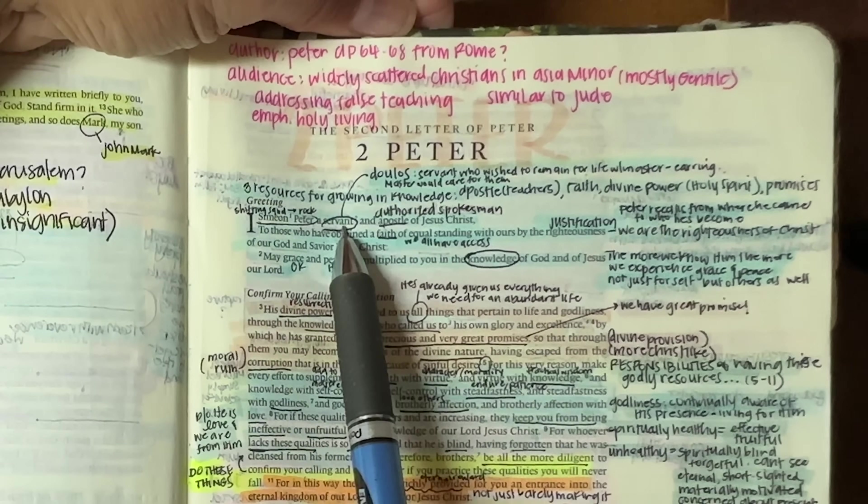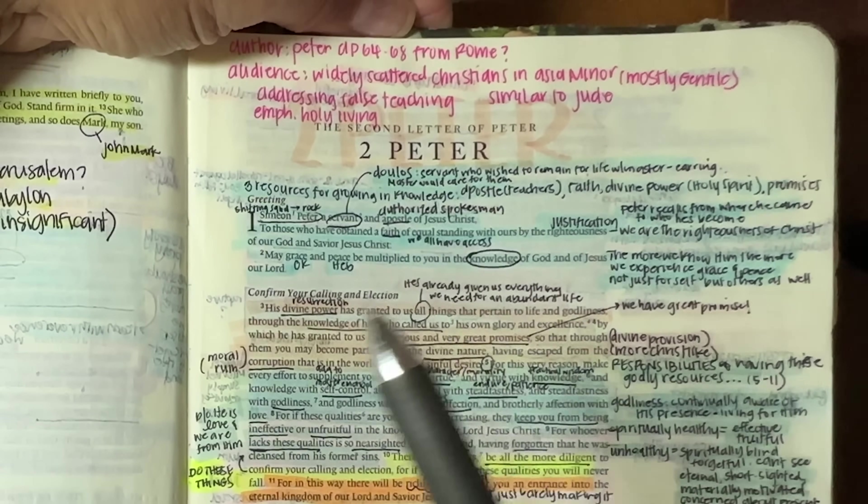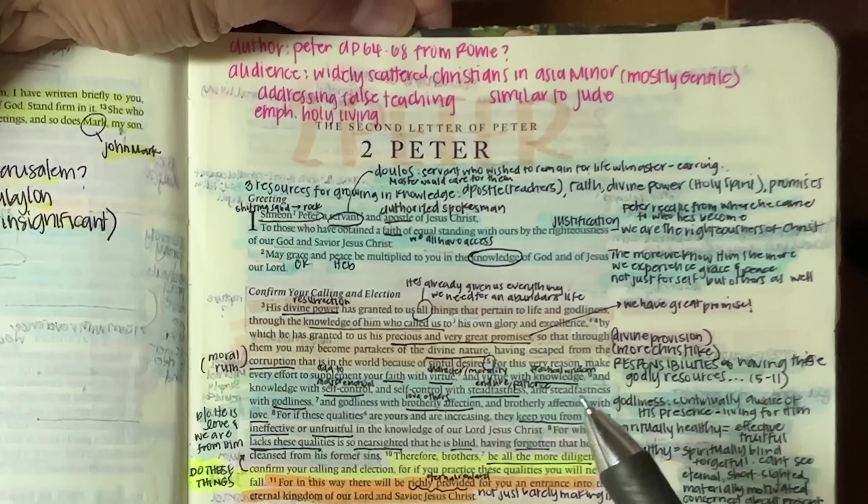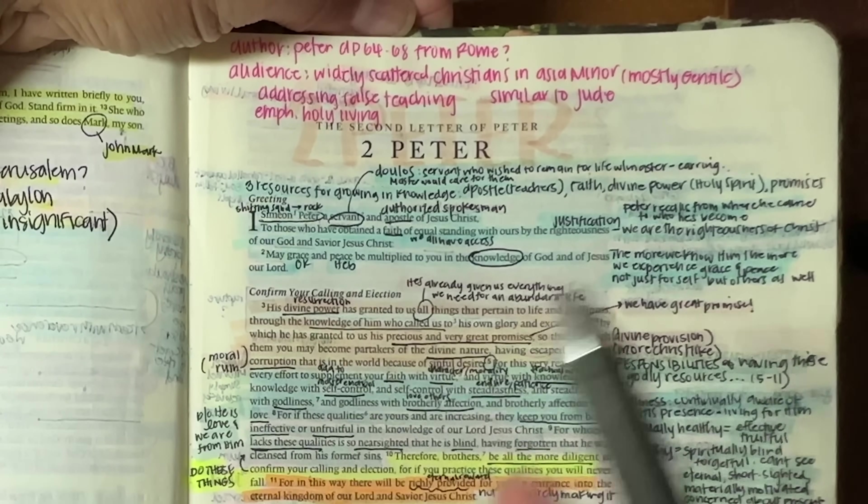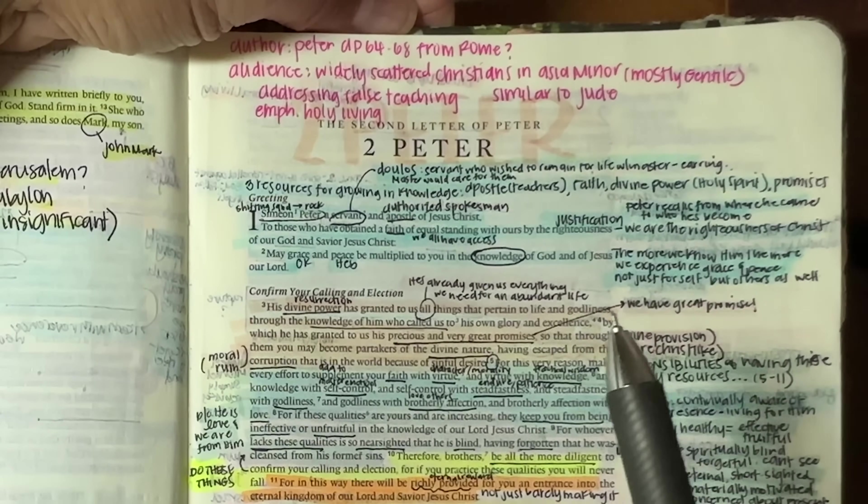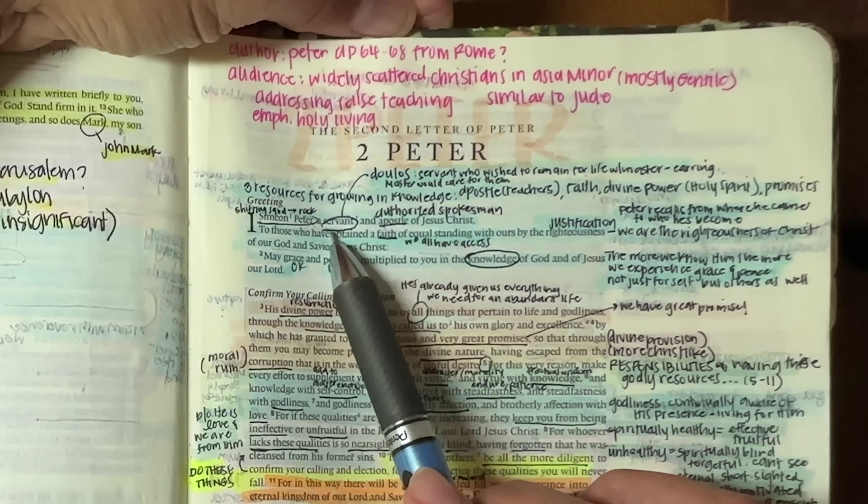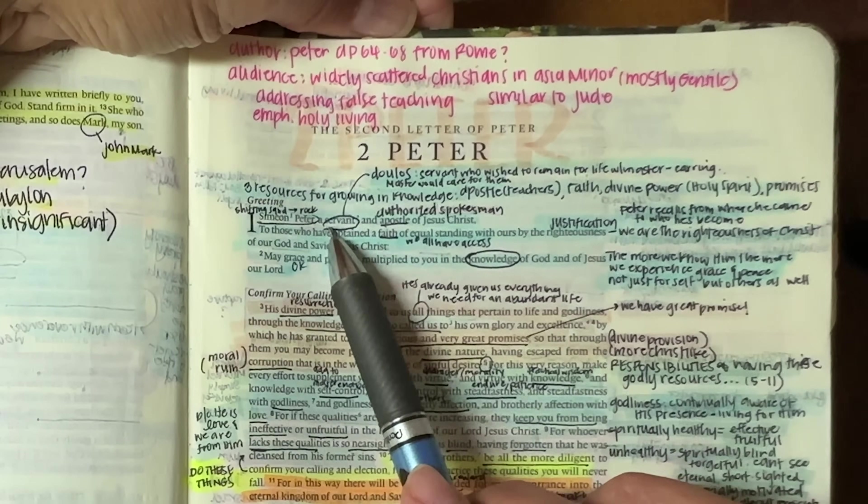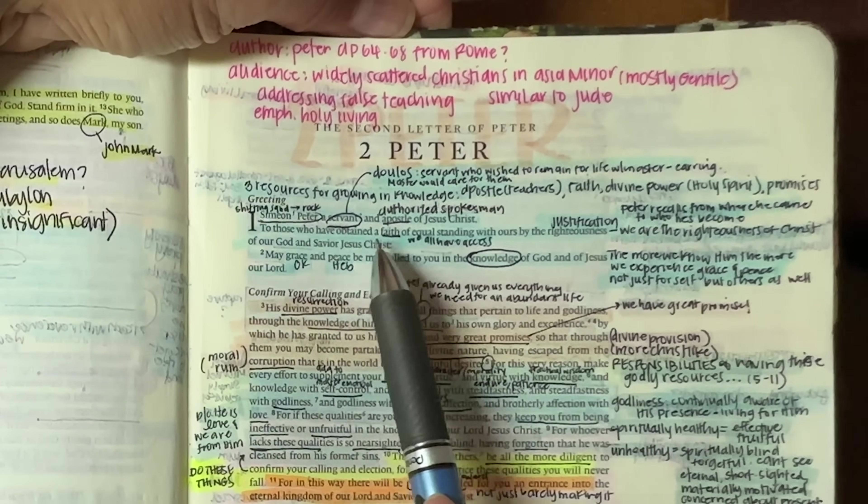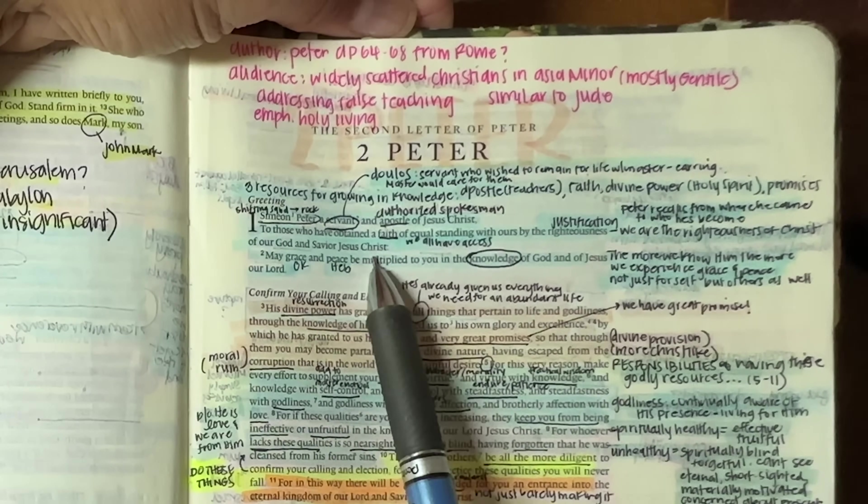So Simeon Peter's servant and apostle of Jesus. So he calls himself a servant first, which is the Greek word doulos, which is a servant who actually wished to remain for life with his master. So remember at the end of service, they could decide if they wanted to stay with that master or if they wanted to be sold off. And if they stayed, they would have to put an earring through their ear, which would declare them as now owned. And the master would then be responsible to take care of this servant.